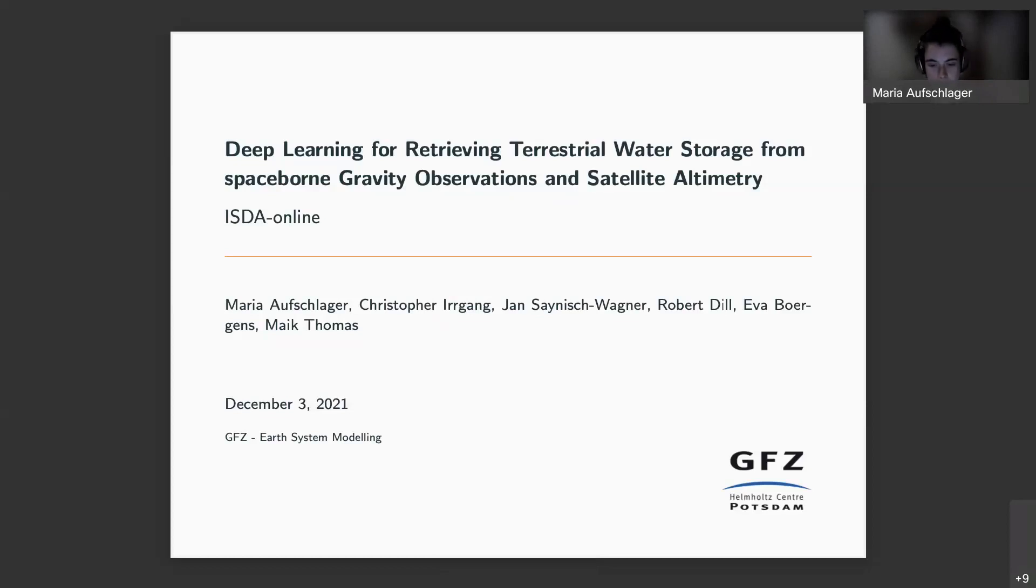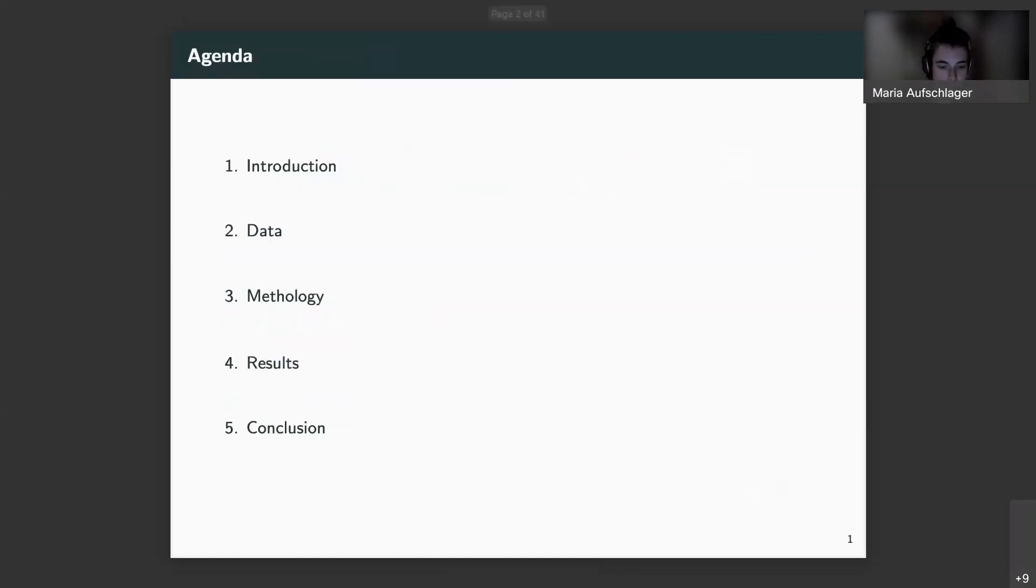I'm currently writing my master thesis at the GFZ in the department of hydrological system modeling. As I said, regarding deep learning for retrieving terrestrial water storage from spaceborne gravity observations and satellite altimetry. I will motivate the topic, why it is an essential task to understand terrestrial water storage. I will talk about widely used products that are used so far for retrieving terrestrial water storage and which we used in the study.